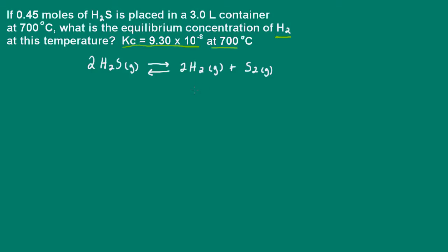The first thing we need to do is set up an equilibrium concentration table. I write the balanced equation, and we want the initial concentrations, the change in concentration as the reaction proceeds, and then the equilibrium concentrations.